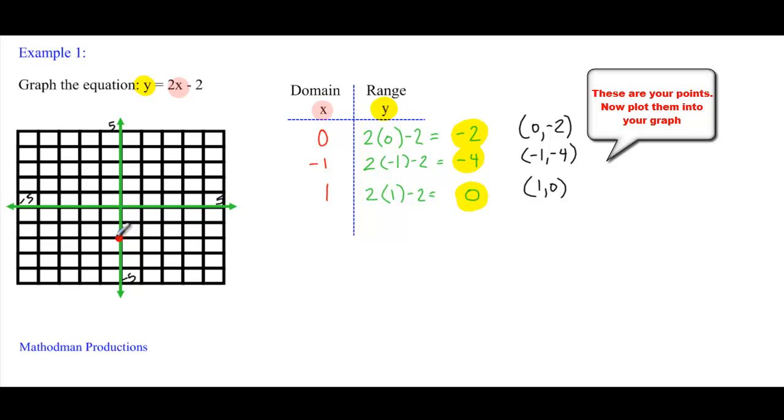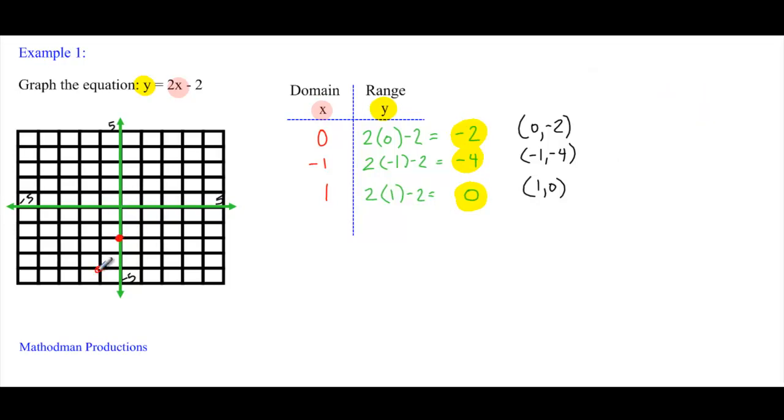The last step is just to plug the points in to your graph. This is pretty easy. There's three points. One way to check if your answer is right or your graph looks right is that all the dots should connect to form a straight line. That is why they are called linear.